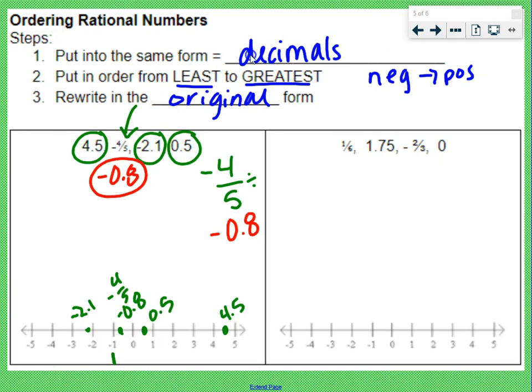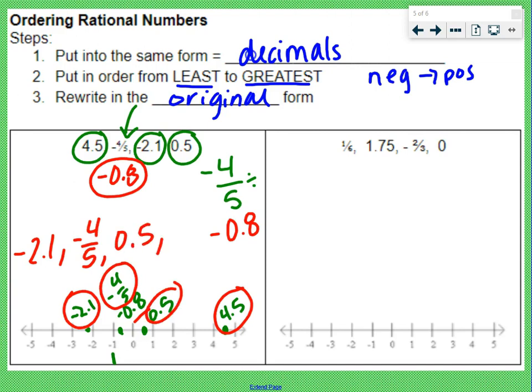Now we have them in order. This is our least number, this is our greatest number. We just rewrite them: negative 2.1, negative 0.8, but we need it in the original form, so we're going to write negative four-fifths, 0.5, and 4.5.